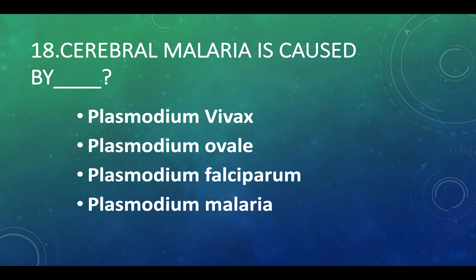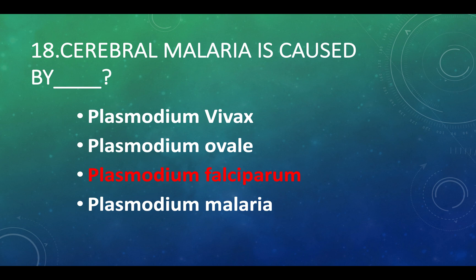Cerebral malaria is caused by: Option A — Plasmodium vivax, Option B — Plasmodium ovale, Option C — Plasmodium falciparum, Option D — Plasmodium malariae. Answer: Option C, Plasmodium falciparum.